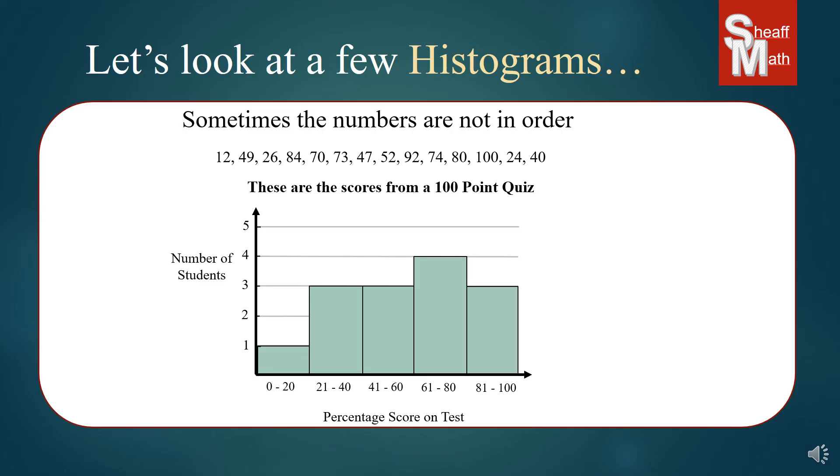Now, before you're done with this one, count how many numbers there are, and then count how many numbers you've done in the bars. So, if you're looking at the bars, one, plus three, plus three, plus four, plus three. Make sure they match the numbers so you didn't miss any.